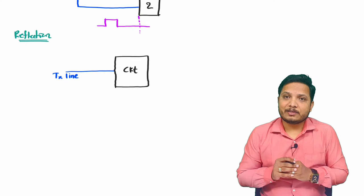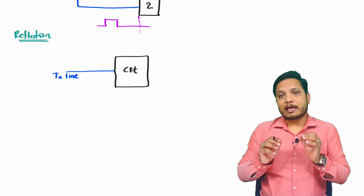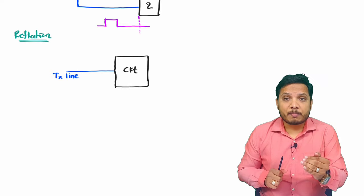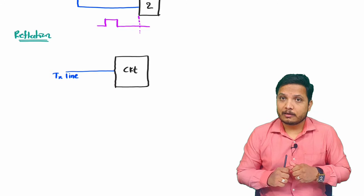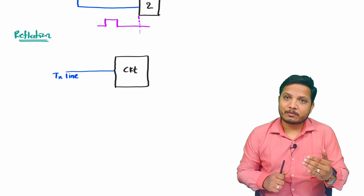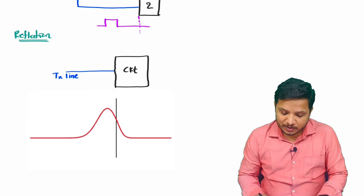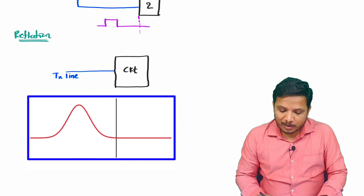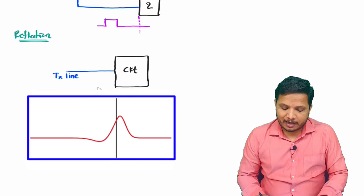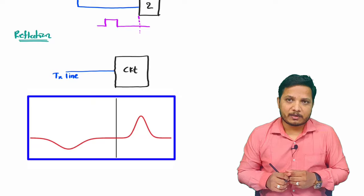Impedance matching is very essential in transmission line. If you don't have proper impedance matching, there is a possibility of reflection, and this impedance matching will change with respect to change in frequency. At microwave frequencies, reflection is a very common issue, and engineers must think about at what frequency the circuit should function. As shown in the animation, we are sending a signal toward the circuit but because of impedance mismatch, some signal gets reflected back, and that reflection increases further as you increase the microwave signal's frequency.